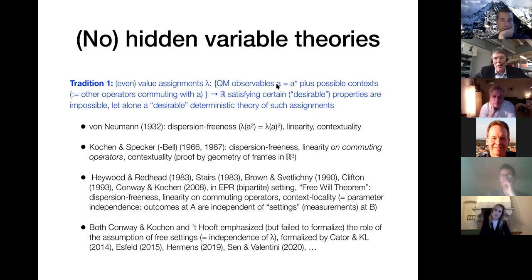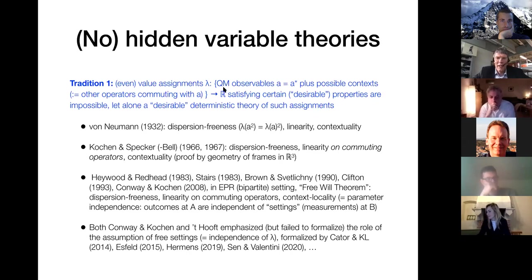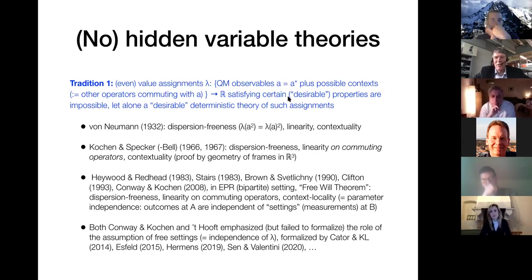It's subtle because one has to leave room for the value of the map not only to depend on the observable A, but also on possible contexts — mathematically identified with algebras of operators commuting with the given A. A so-called contextual assignment has λ depend not only on A but on context. Tradition one, started by von Neumann, tries to exclude the possibility of even value assignments if they satisfy certain desirable properties.